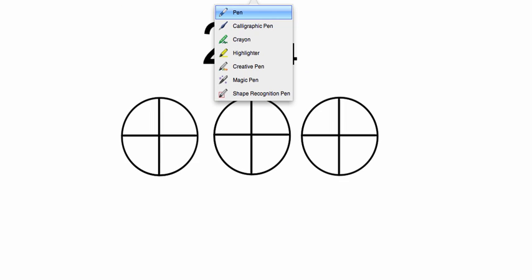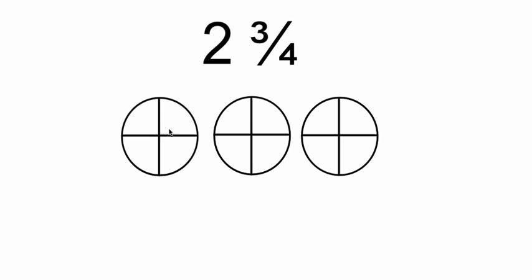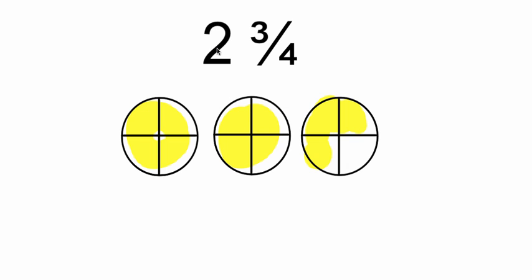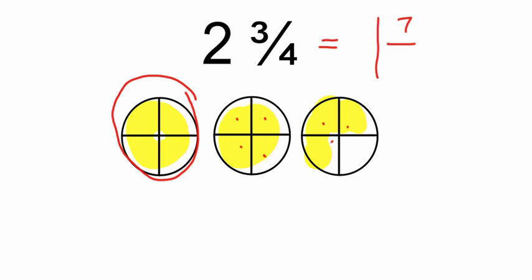Let's practice another one. We have two and three-fourths. I'm going to shade a whole and a whole — that represents our two — and then shade three-fourths. But I want to find an equivalent fraction, so instead of two and three-fourths I'm just going to do one whole, making this a one. Then I count the total pieces: one, two, three, four, five, six, seven out of four — since the bottom number is how many are in one whole. So two and three-fourths also equals one and seven-fourths.